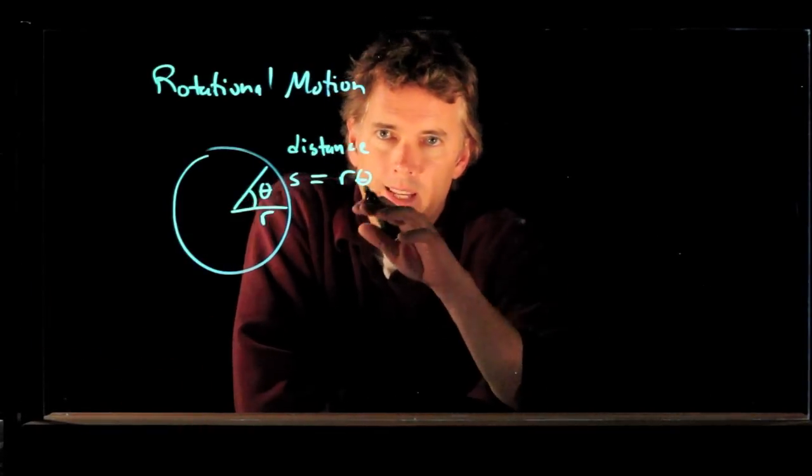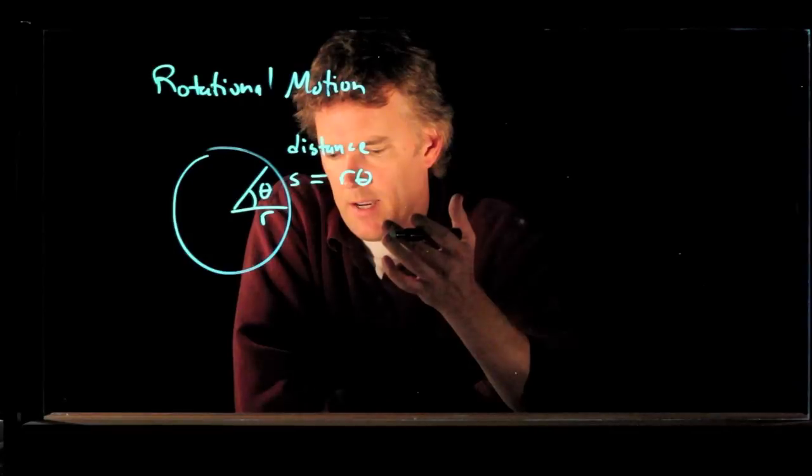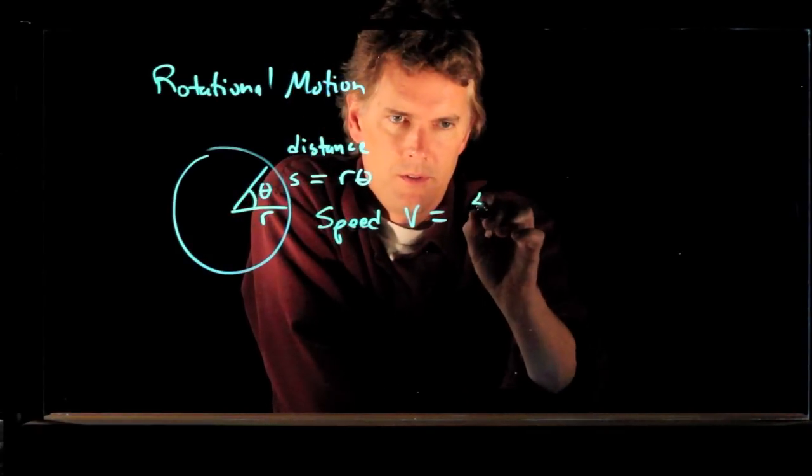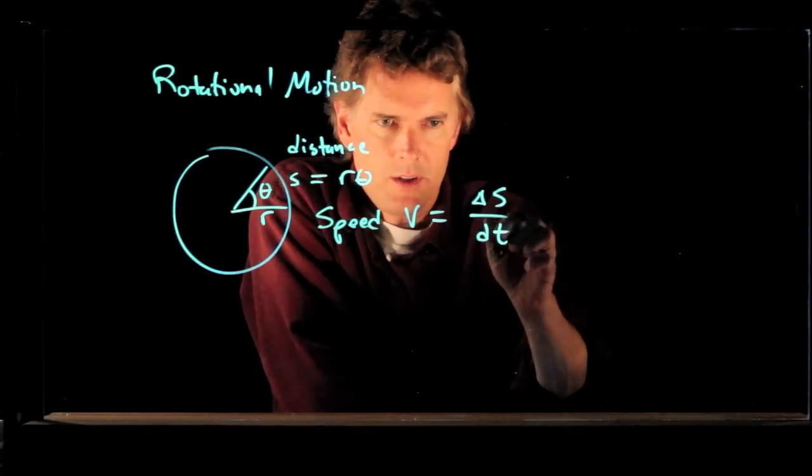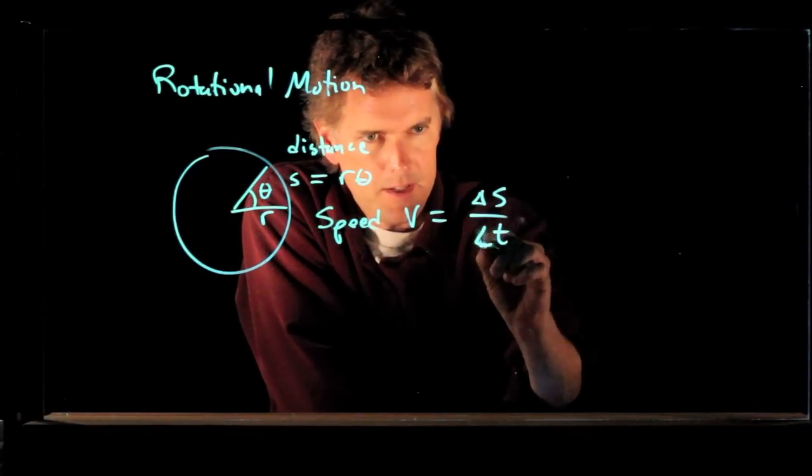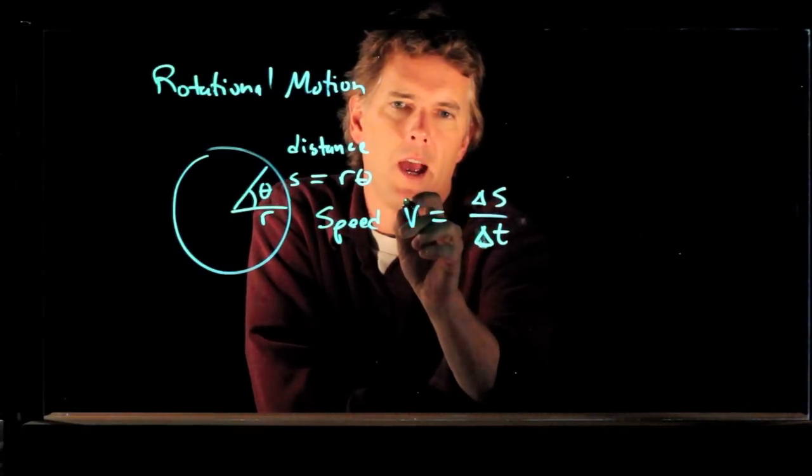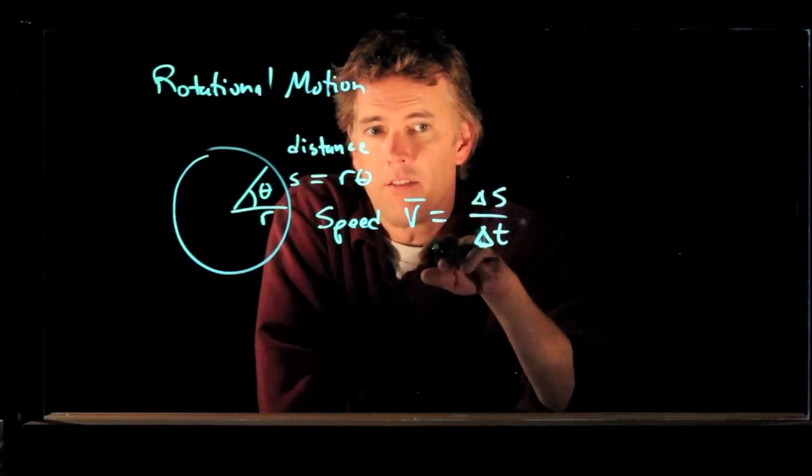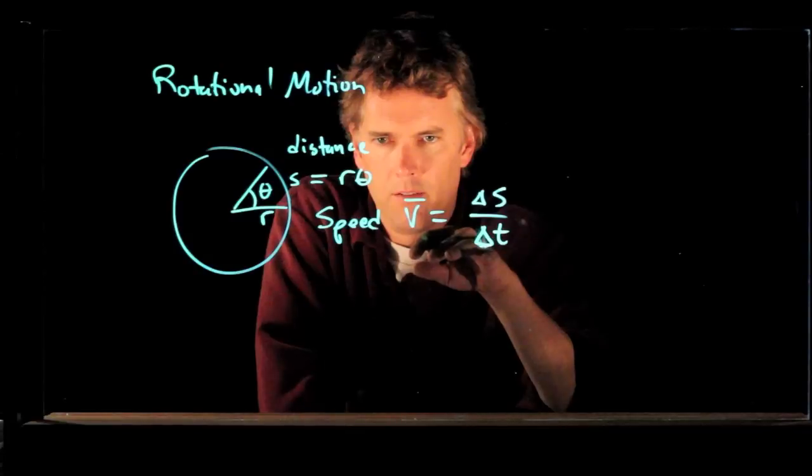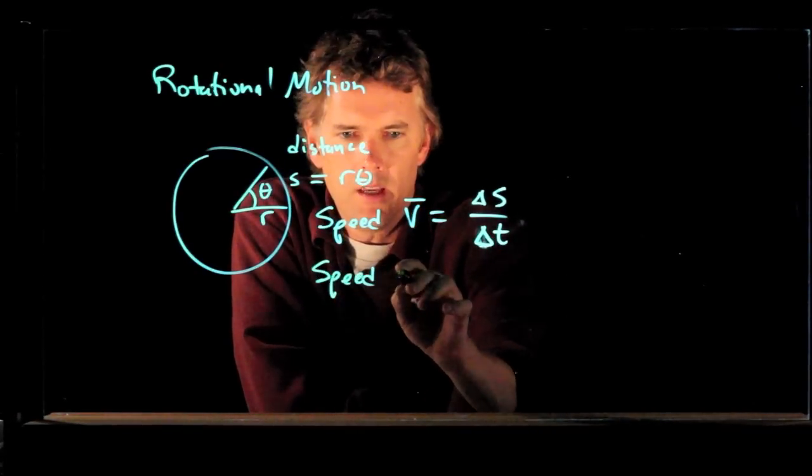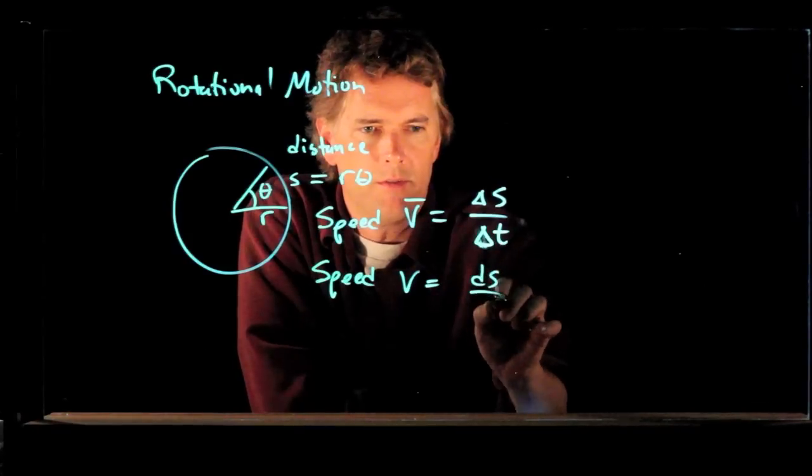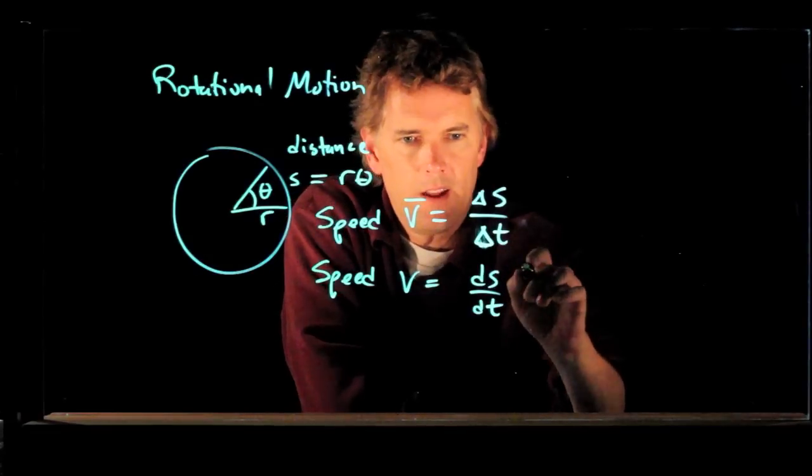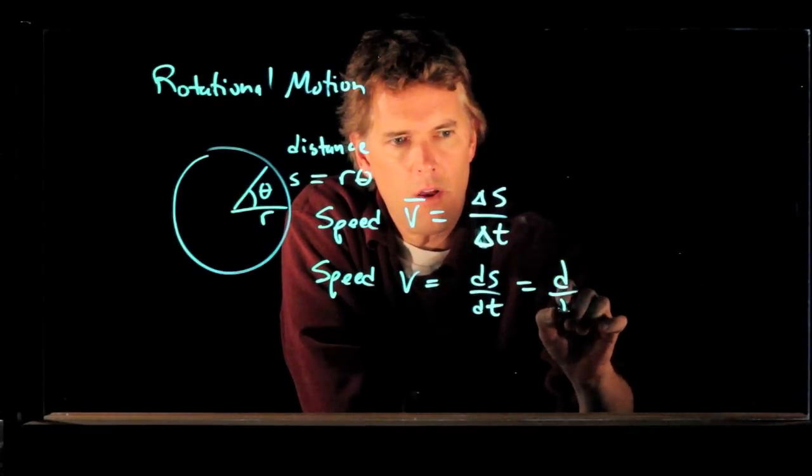Now, if you go a distance S and you do it in some amount of time, then your speed V is just equal to delta S over delta T. And this would be something like your average speed. If you want to write this out properly using calculus, what you can say is the speed V is the derivative dS/dt. But we know exactly what S is. S is equal to R theta.